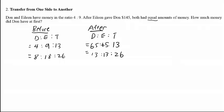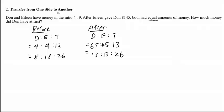Keep in mind that the total in the before model must be the same as the total in the after model. We can now find how many units have moved over. For Don, he has increased by 5 units — 13 minus 8 is 5. For Eileen, she has decreased by 5 units also — 18 minus 13 is 5 units.